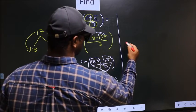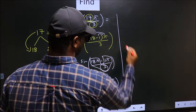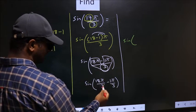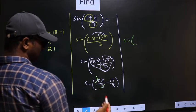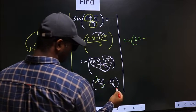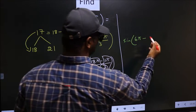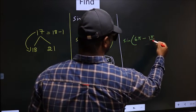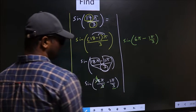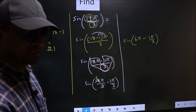That is sine of 18 pi by 3, you cancel. 3 ones, 3 sixes. We get 6 pi minus this angle as it is, you write 1 pi by 3. Okay, so far next.